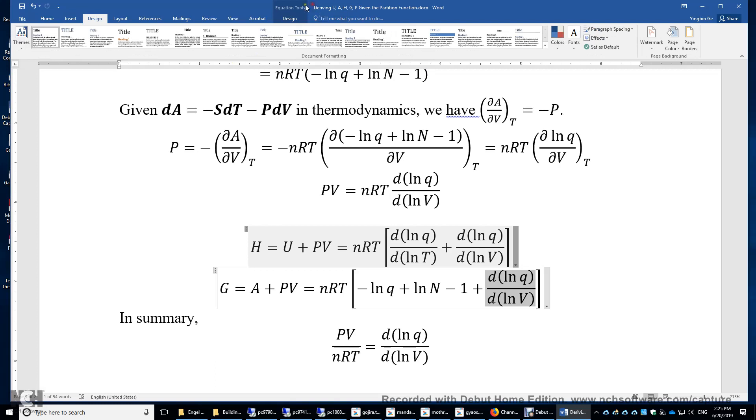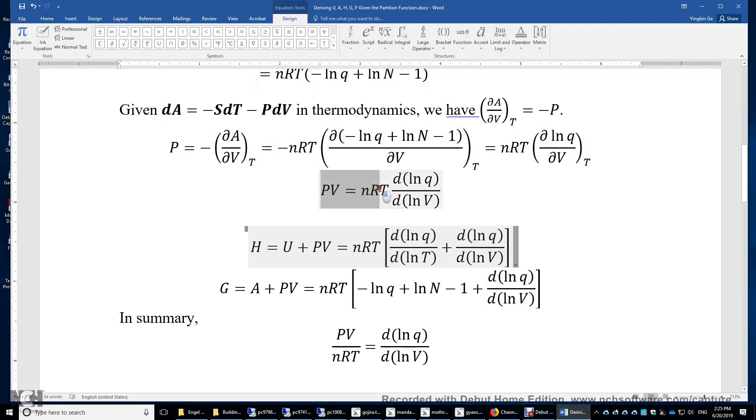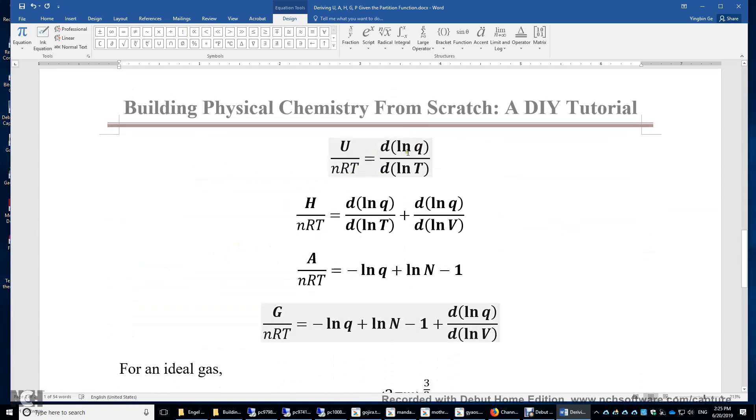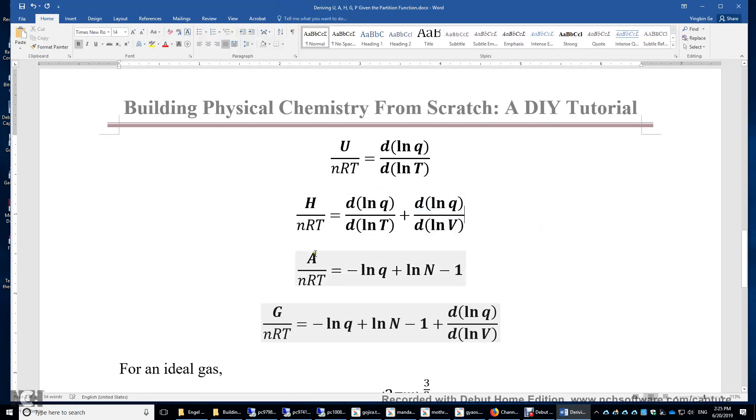And in summary, we have this PV divided by nRT equals dLnq over dLnV. All right, so it looks nice. And U over nRT is dLnq over dLnT. H over nRT equals U over nRT plus PV over nRT. And A over nRT is negative Lnq plus Ln n minus 1. G over nRT is negative Lnq plus logarithm of n minus 1 plus dLnq over dLnV. Again, this is the PV term.